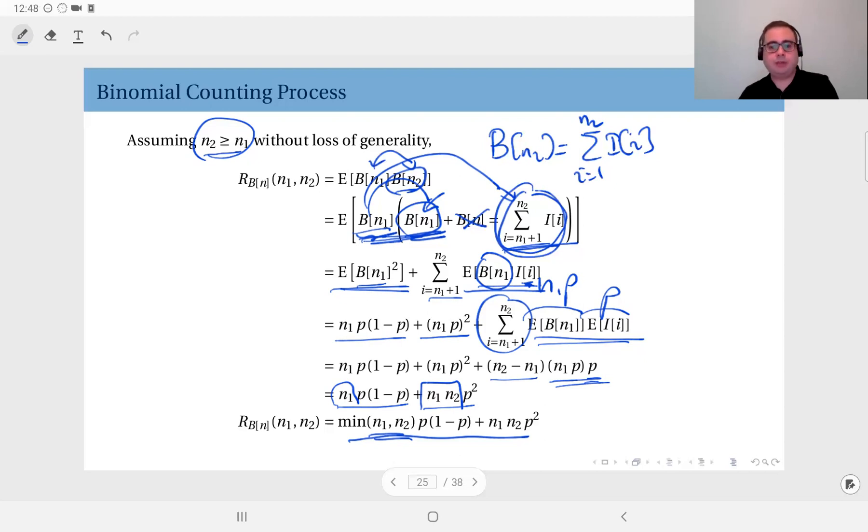Okay, what we have already established is that the mean depends on time, so it's not wide sense stationary. But the autocorrelation also depends on n1 and n2 separately.